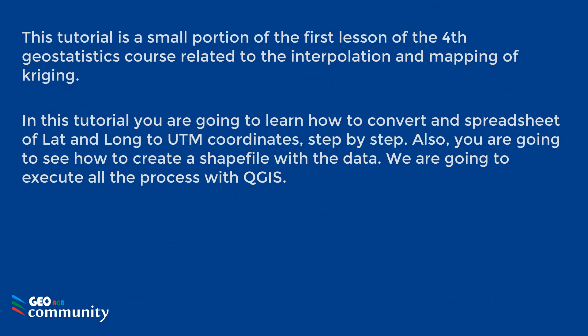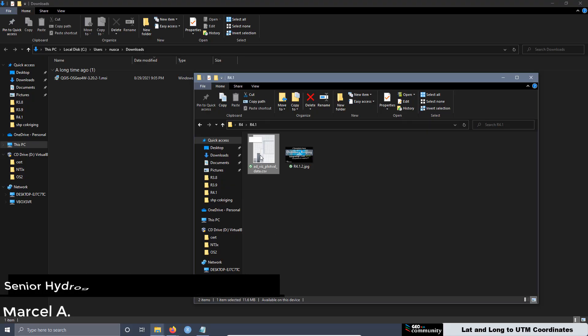This tutorial is a small portion of the first lesson of the fourth geostatistics course, related to the interpolation and mapping using kriging. In this tutorial you are going to learn how to convert a spreadsheet of latitude and longitude to UTM coordinates step by step. You are also going to see how to create a shapefile with the data. We are going to execute all the process with QGIS.